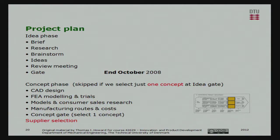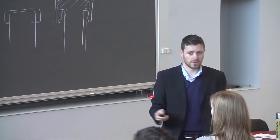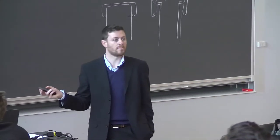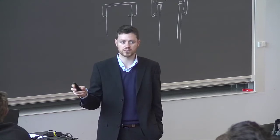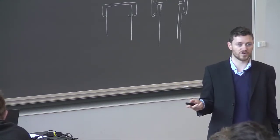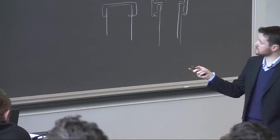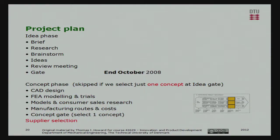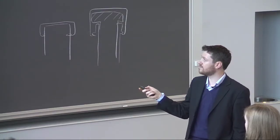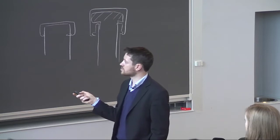So we have a project plan, which consists of an ideas phase to produce the brief I've just shown you. Then you do some basic research, brainstorm a load of ideas, create the ideas, and have some thoughts about the production systems. Then you have a review meeting and a gate. At the gate meeting, we're looking at about 12 well-drawn-up concepts, from which we select maybe three to take forward to further development. Then you move on to the concept phase, where we'll be looking at this area of the integrated product development process: CAD design, FMEA, FEA models and trials, consumer sales research, and manufacturing routes and costs.